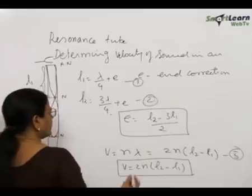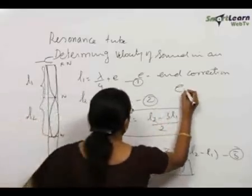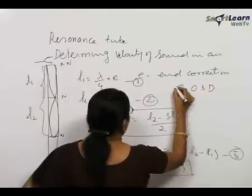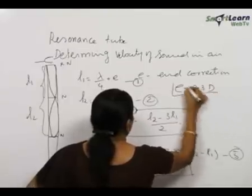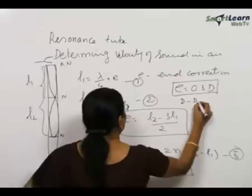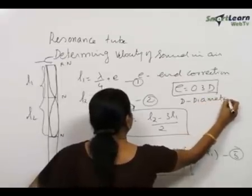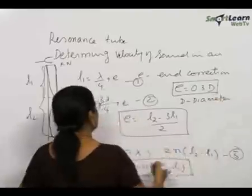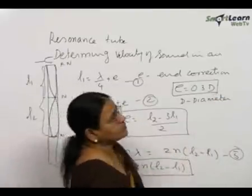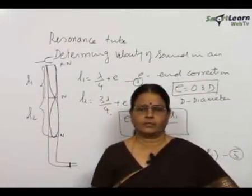The end correction E is related to the diameter of the tube as E equals 0.3d, where d is the diameter of the tube. This is the experimental determination of the velocity of sound using the resonance column.